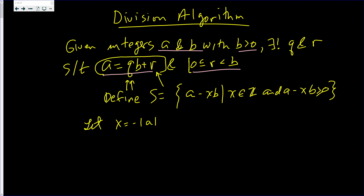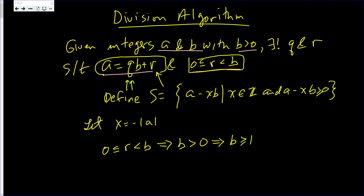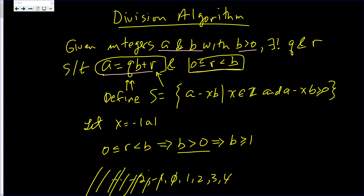We said that 0 ≤ R < B, which implies B is bigger than 0. Since B is an integer, B must be at least 1. The integers go from negative infinity up through negative 2, negative 1, 0, 1, 2, 3, 4. If B is bigger than 0, then B cannot be 0 or any negative number, so B can only be one of the positive integers.